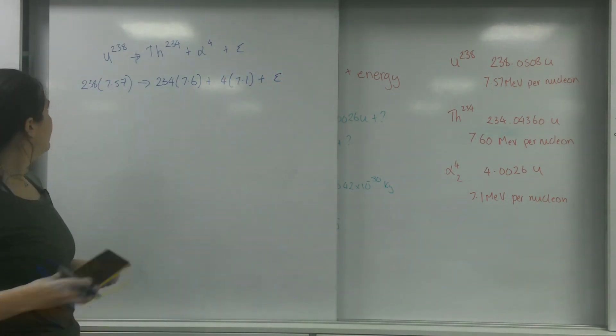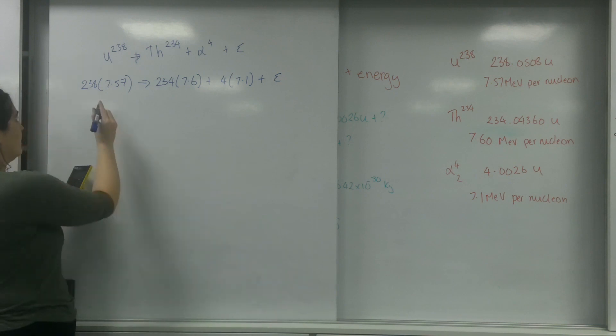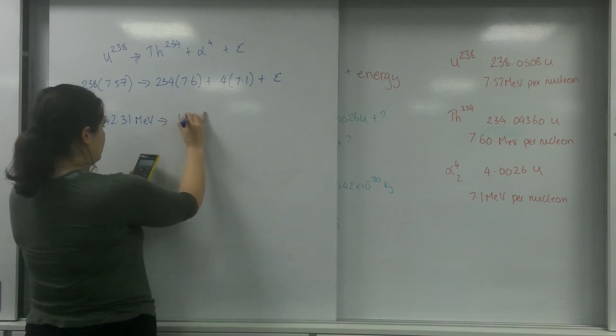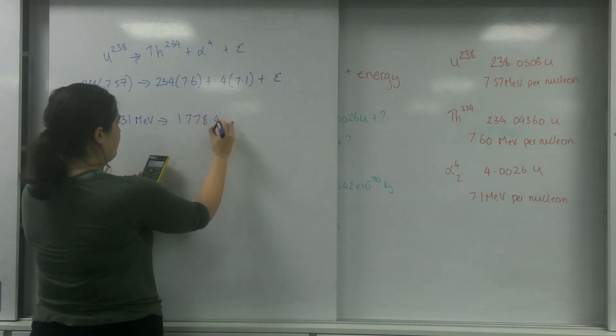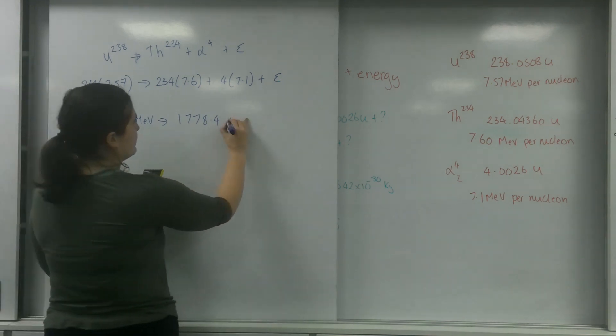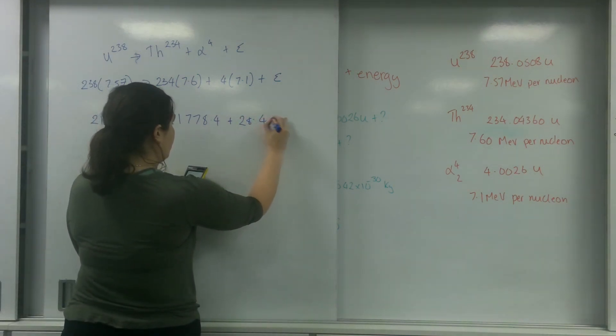238 times 7.57 gives me 1802.66 MeV. That goes to 234 times 7.6 which is 1778.4 MeV, plus 4 times 7.1 which is 28.4 MeV.